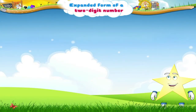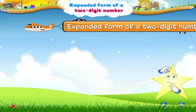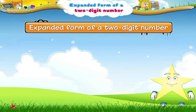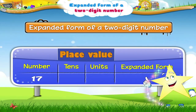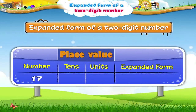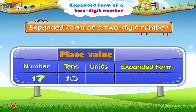Starry, do you know that even numbers can be expanded? Let me show you how. Look at the two-digit number 17. The digit in the tens place is 1. So, its place value is 10. The digit in the units place is 7.